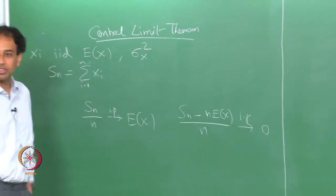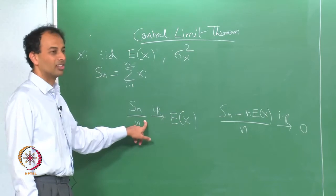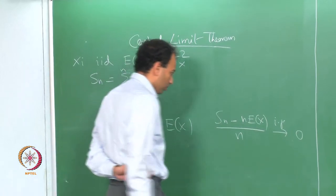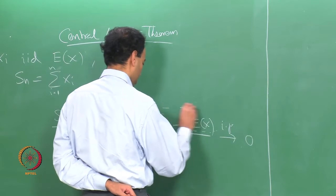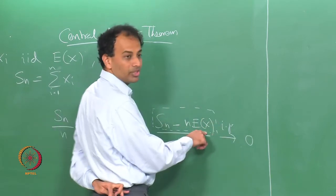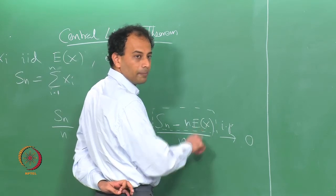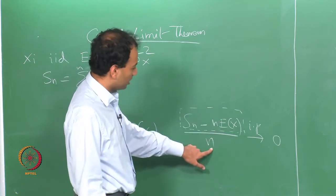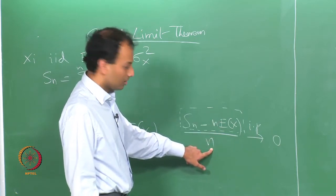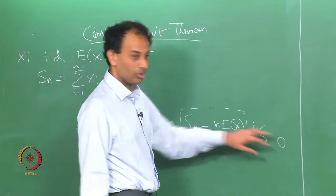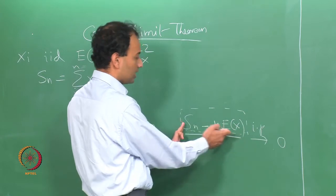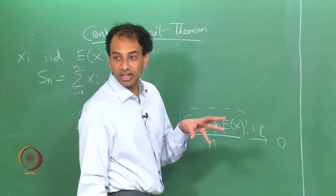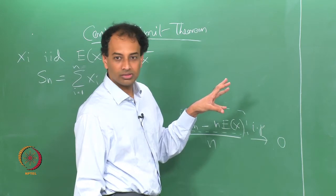This is because of the law of large numbers. If you look at the term S_n minus n times the expected value, this result is saying that this difference is sub-linear in n as n becomes large. This ratio goes to 0, which means that the fluctuation — S_n minus n times the mean — is sub-linear in n. That much is clear from the law of large numbers.